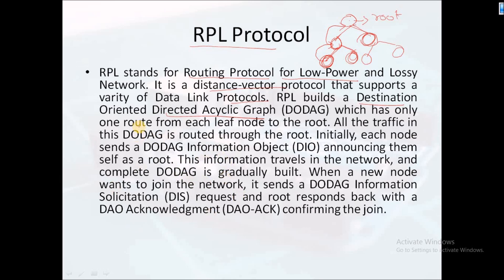The new node sends a DAG Information Solicitation, or DIS message, requesting to join. The root node responds back with a DAG acknowledgement, confirming that yes, it can join the network. This is how the RPL protocol works. RPL uses IPv6, which is 128-bit addressing and follows hexadecimal format.